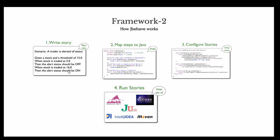Based on the story, we write a step class in Java — a POJO class which contains the logic for each and every step. Then we configure the stories by mapping the story file with the step file in the configuration file. For running it, we can run via IntelliJ or Eclipse, and the build can also be built directly via Maven. This is the complete flow of the JBehave components.